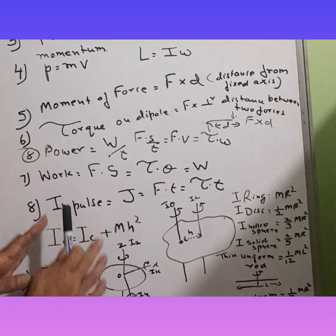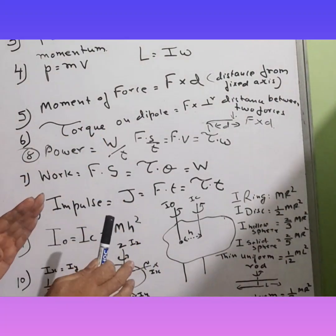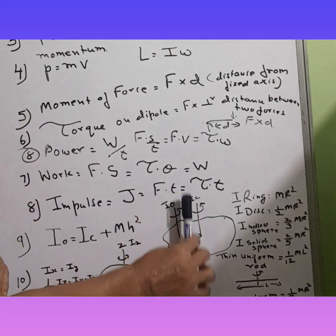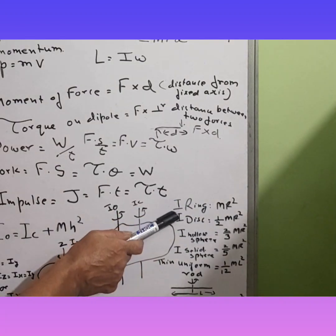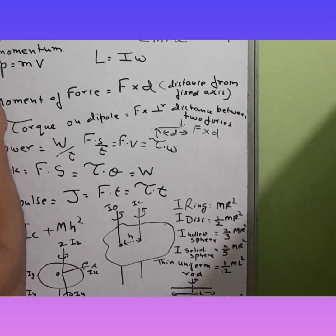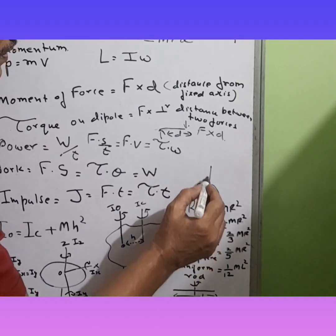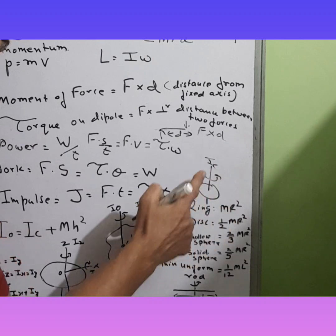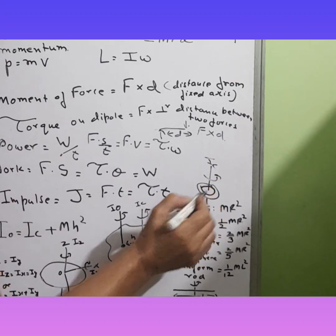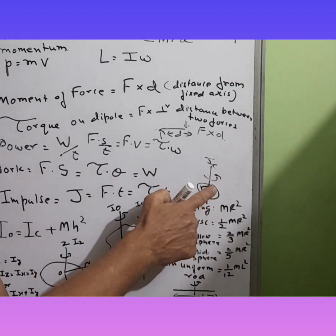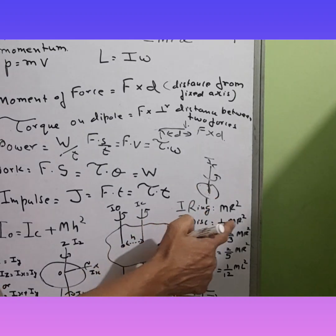We need to know Ic for various shapes, so you have to memorize these formulae. For a ring, the moment of inertia from the center — Ic — is MR squared. For a disk, Ic is half MR squared, that is (1/2)MR².